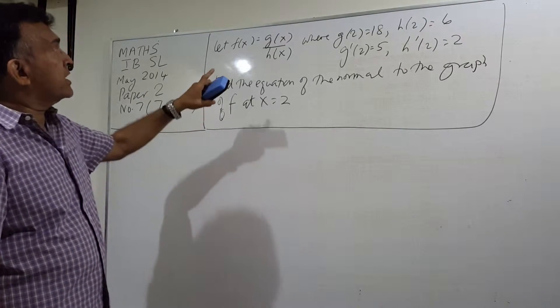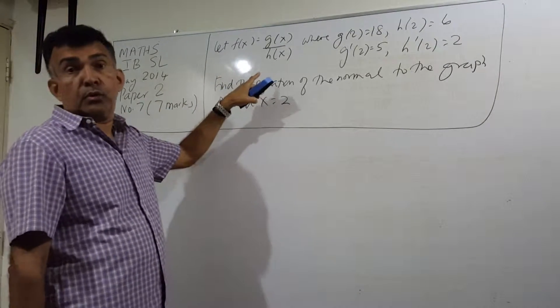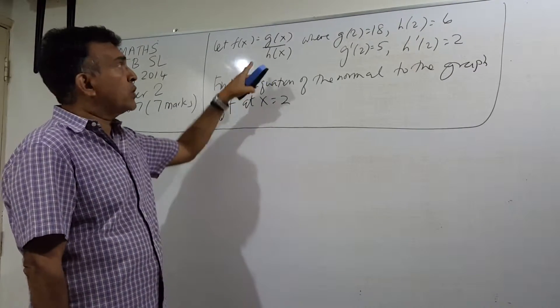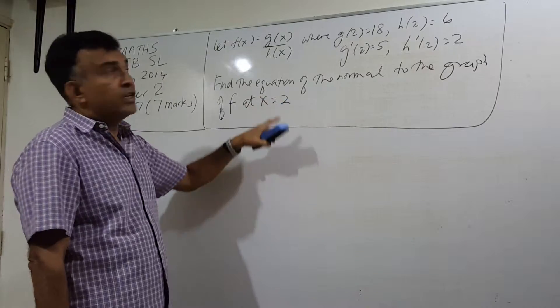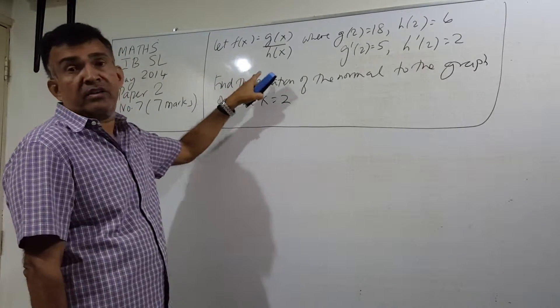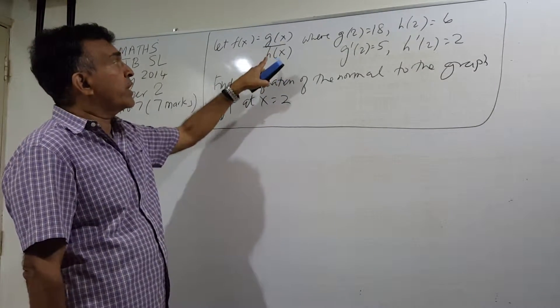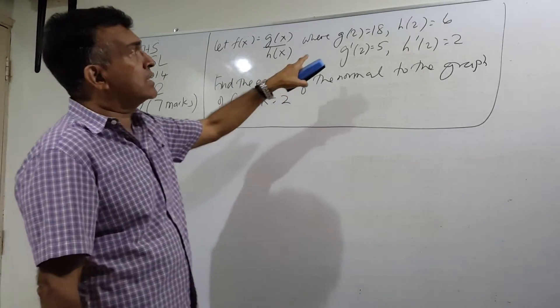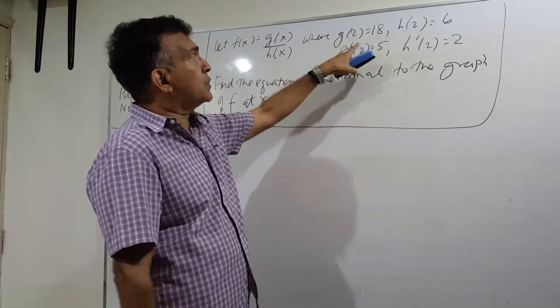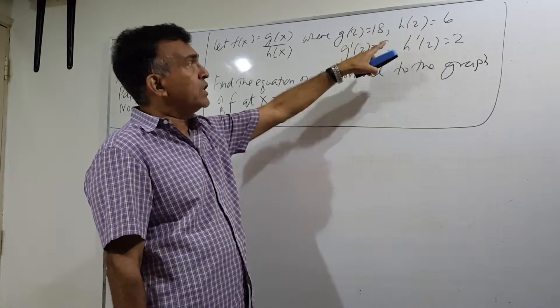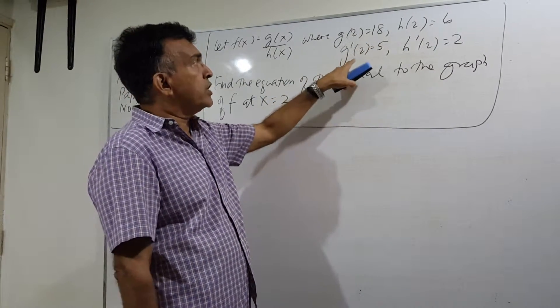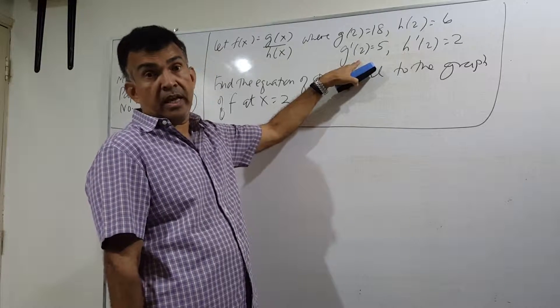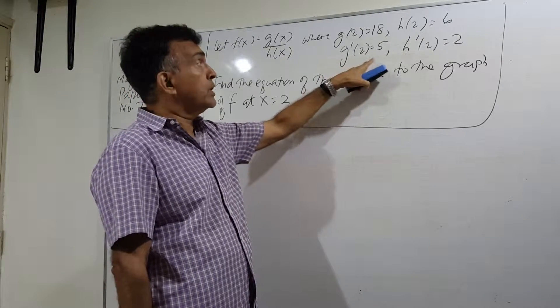The question goes like this. Let f(x) equals g(x) over h(x). So f(x) is defined as a ratio of two functions, g of x divided by h of x. They gave us some information: g(2) is 18, h(2) is 6, g prime 2 is 5.